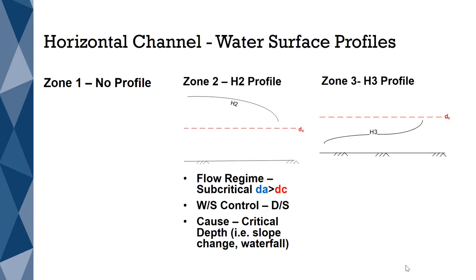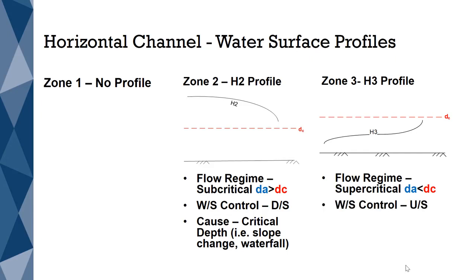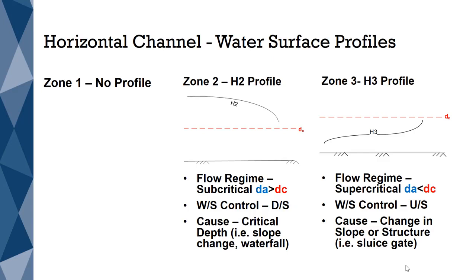An H3 profile is formed in Zone 3, when the flow regime is supercritical. A supercritical channel occurs when the actual depth is less than the critical depth. Flows that are supercritical are always controlled upstream. And for an H3 profile to occur, there needs to be something causing the water surface to go below critical. This will occur when there is a slope change or a sluice gate.